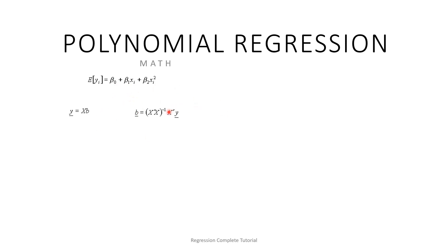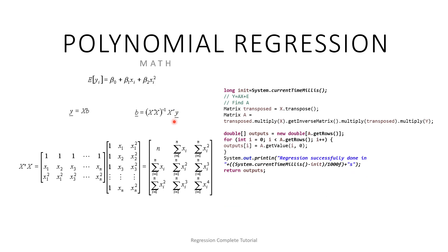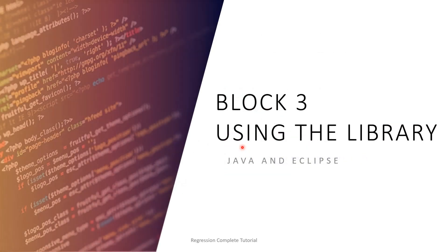Using the transpose matrix, we multiply the transpose matrix with the matrix X to get an intermediate product, then take its inverse, and then multiply this by the transpose matrix and the Y dataset. This gives us all the coefficient values for the polynomial regression.